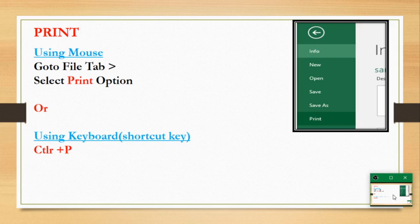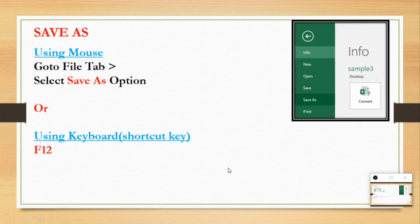This picture shows how we can create a duplicate file from an existing file. The shortcut key F12 is used for Save As. This option is used to create a duplicate file. You can also use the mouse by going to the file tab and selecting Save As — either way the result will be the same.